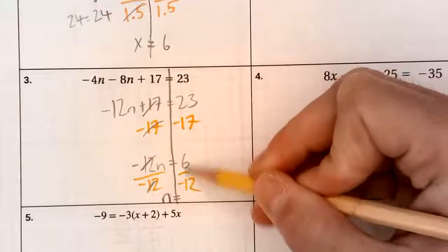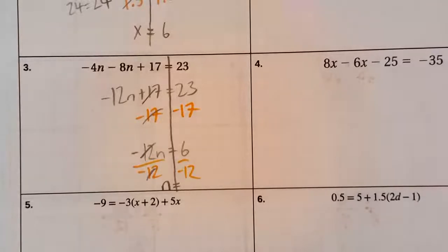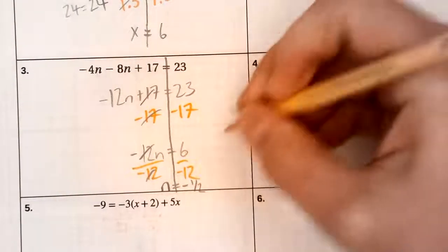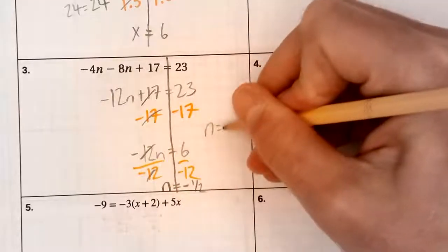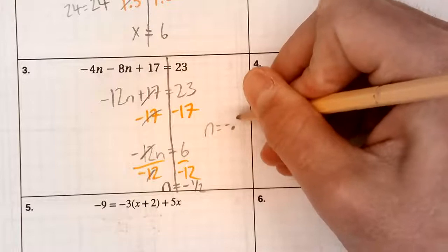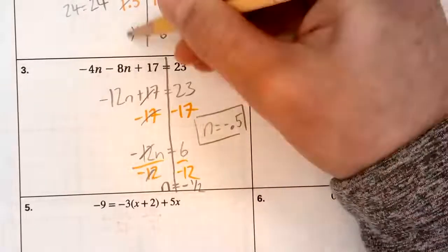6 divided by negative 12. That is negative 1 half. Negative 1 half. So n equals negative 1 half or negative 0.5. Same thing. Both of those would be good.